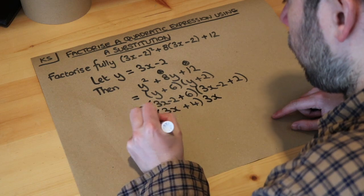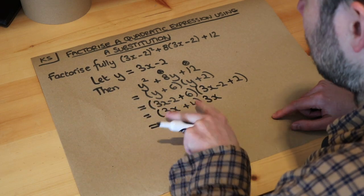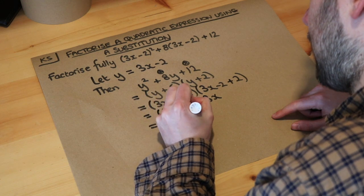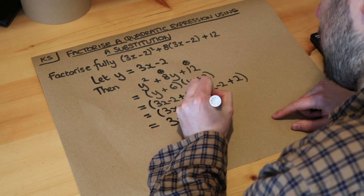Now in general when we have an unbracketed term and a bracketed term we should always put the unbracketed term first. So make sure you write 3x brackets 3x plus 4 and we end up with this.